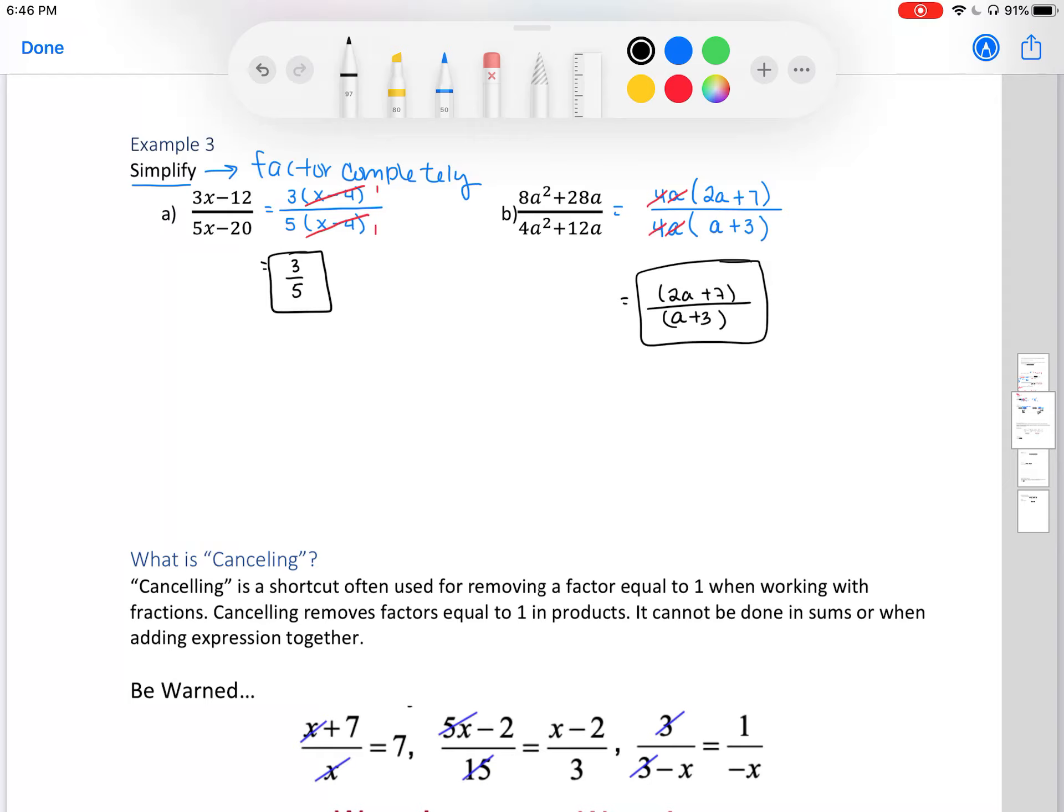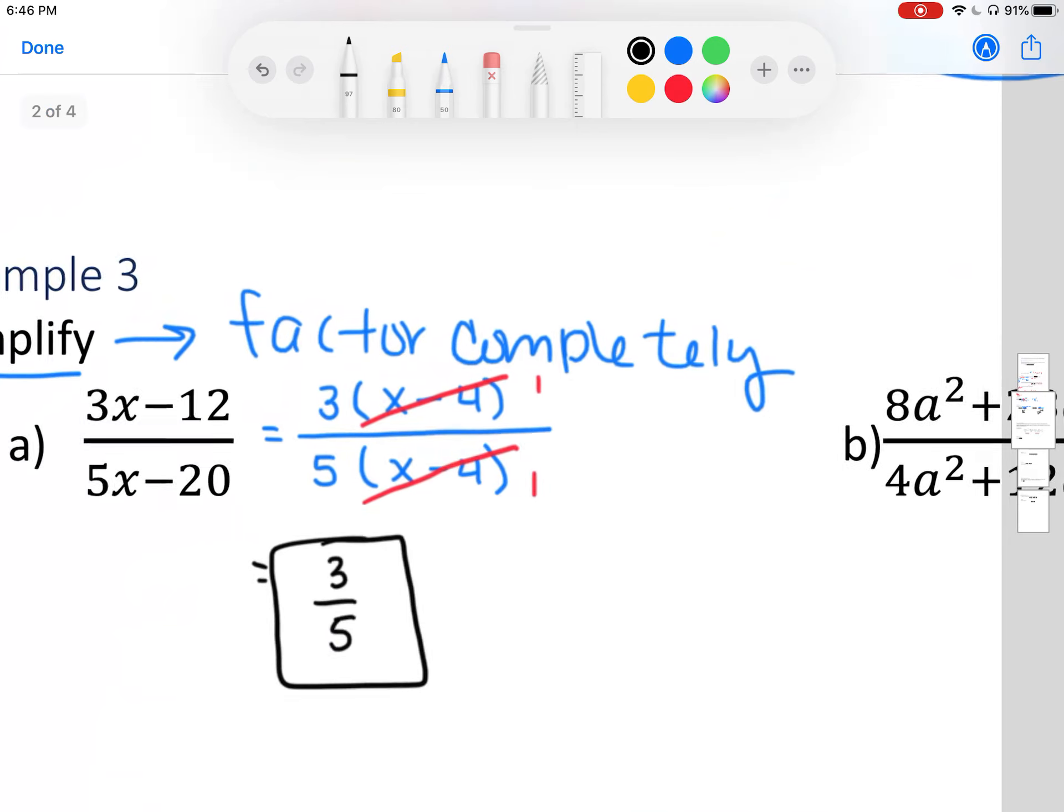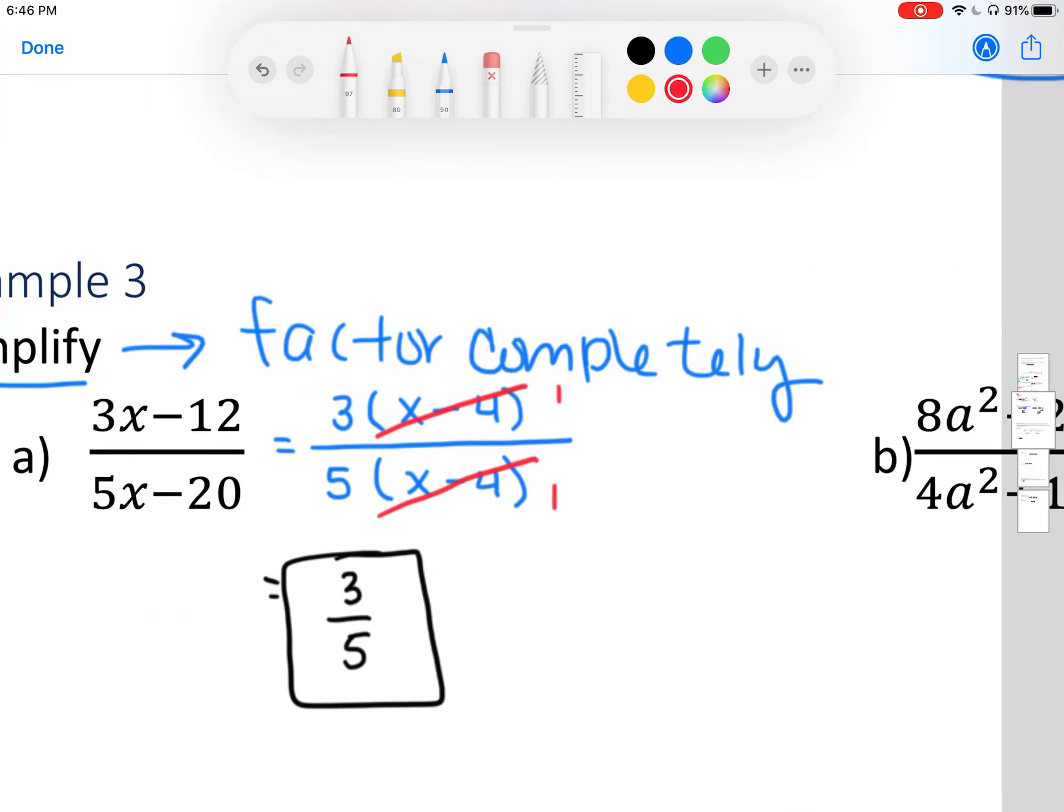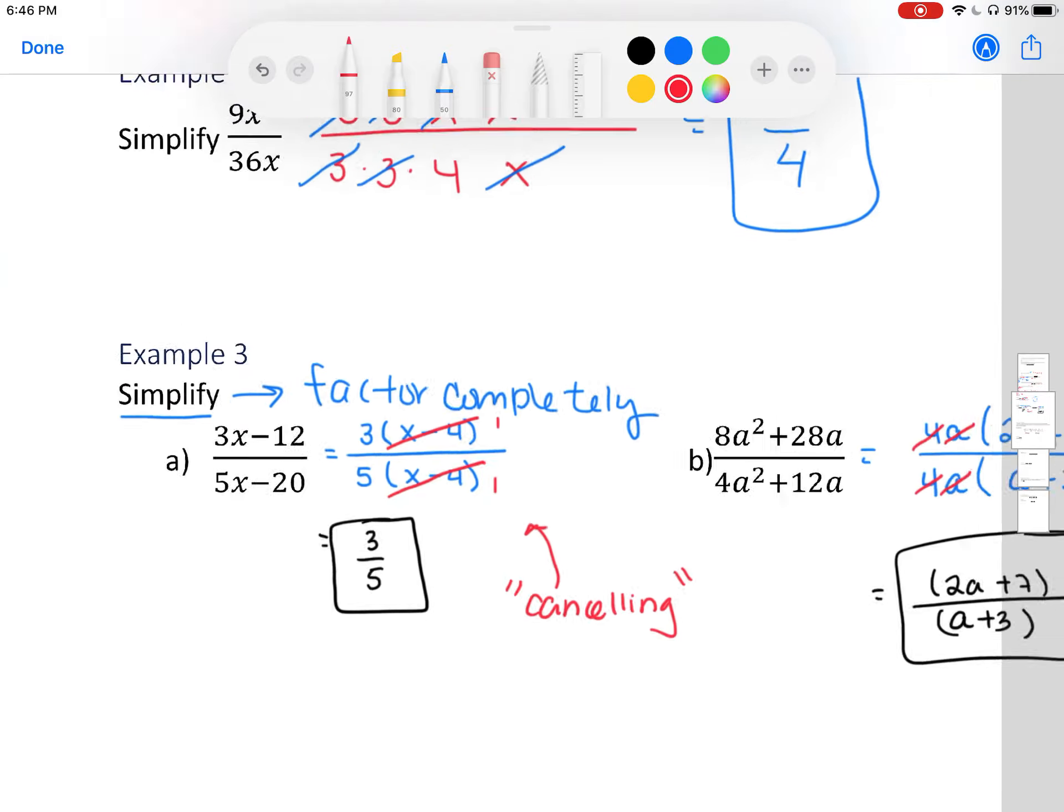Next, what is canceling? Canceling is a shortcut often used for removing a factor equal to 1. When working with fractions, canceling removes factors equal to 1 in products. It cannot be done in sums or when adding expressions together. So when we divided to make 1 above here, that's what I'm referring to as canceling. Now, when I went to school, I had a teacher who did not like the word canceling. She said they divided to make 1. If you like to say canceling, that's okay as long as you're doing it properly.